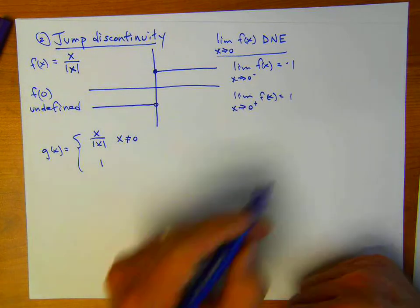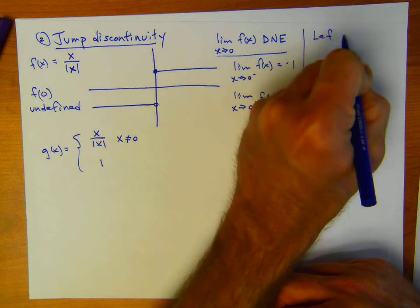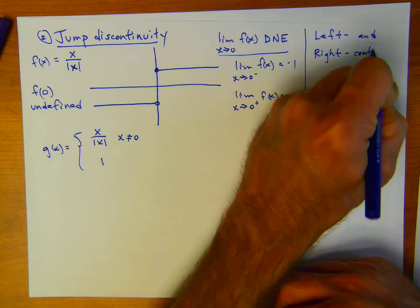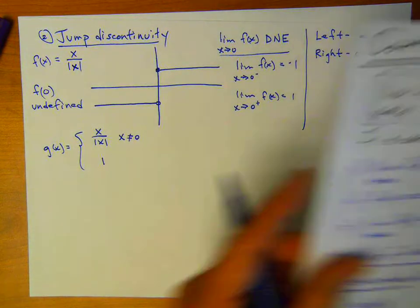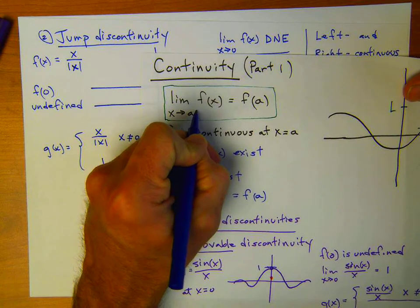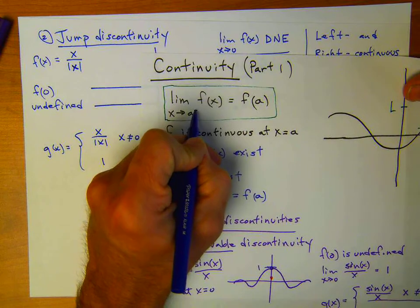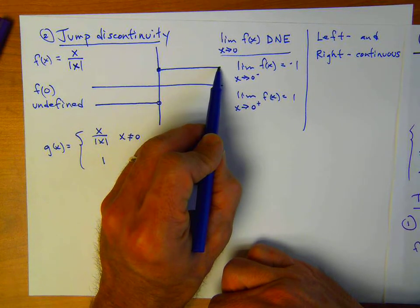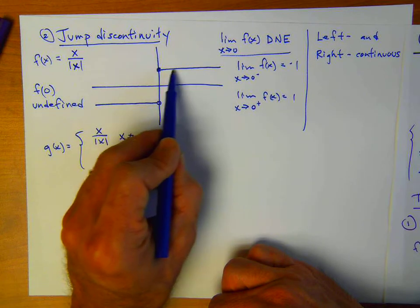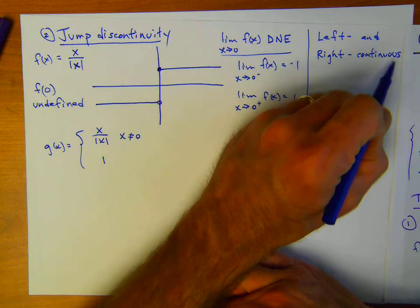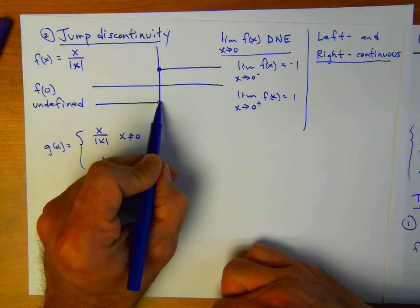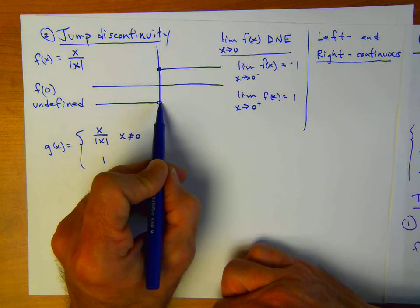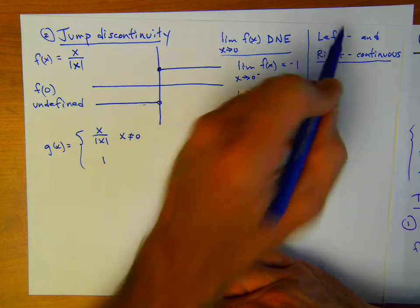We can also have left and right continuity at a point. If the left-sided limit equals the function value, then it's left continuous. If the right-sided limit equals the function value, then it's right continuous. In this case, if we had filled in one at x equals zero, the right-hand limit goes to one and the function value is one, so that would be right continuous. If we had filled it in at negative one instead, the left-sided limit would equal the function value and it would be left continuous. We can't fill in both because that would give two y-values for one x-value, contradicting the definition of a function.